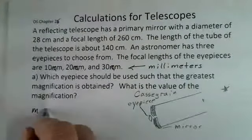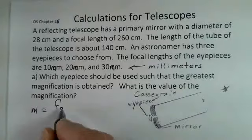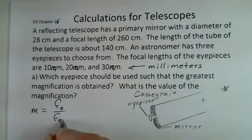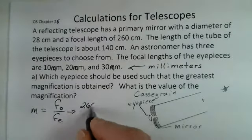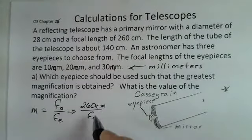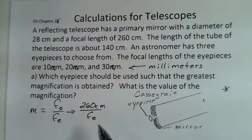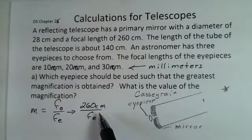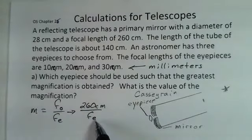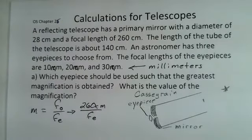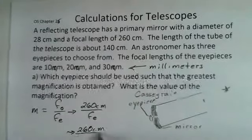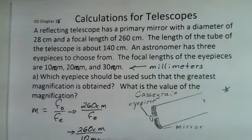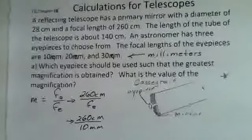Magnification for a telescope equals focal length of the objective divided by focal length of the eyepiece. Our objective has a focal length of 260 centimeters. Since we're doing division, to get the largest result we want the smallest denominator. That's the 10 millimeter eyepiece, so we have 260 centimeters divided by 10 millimeters.